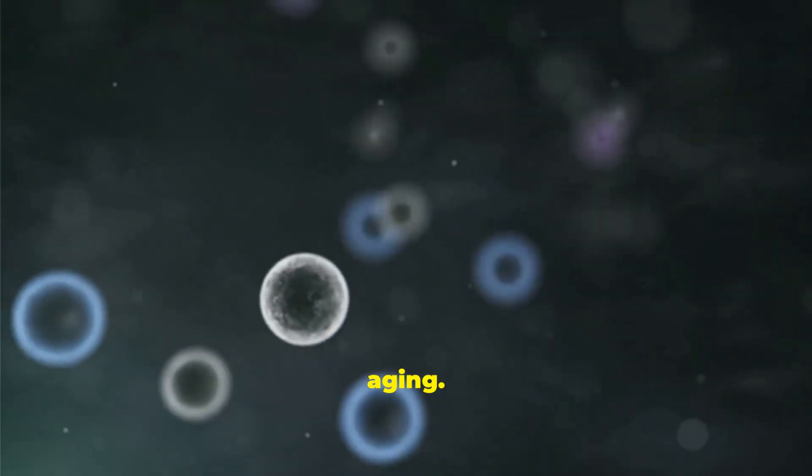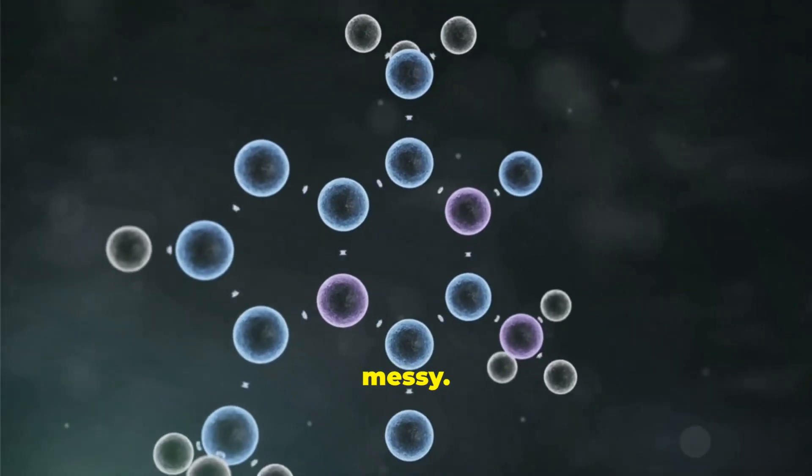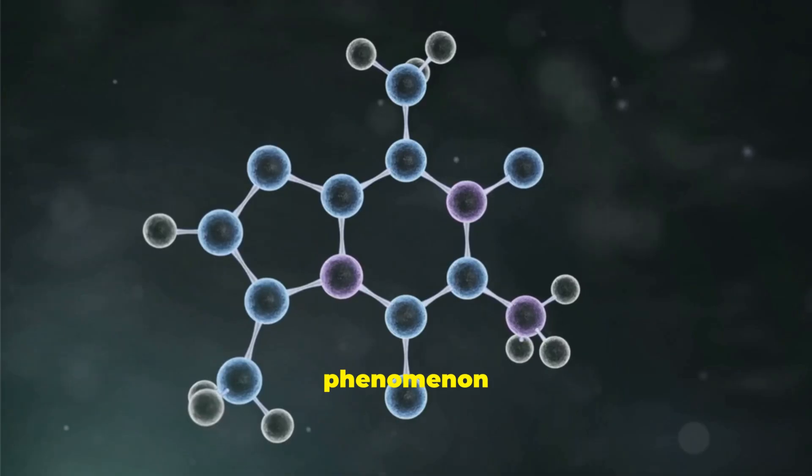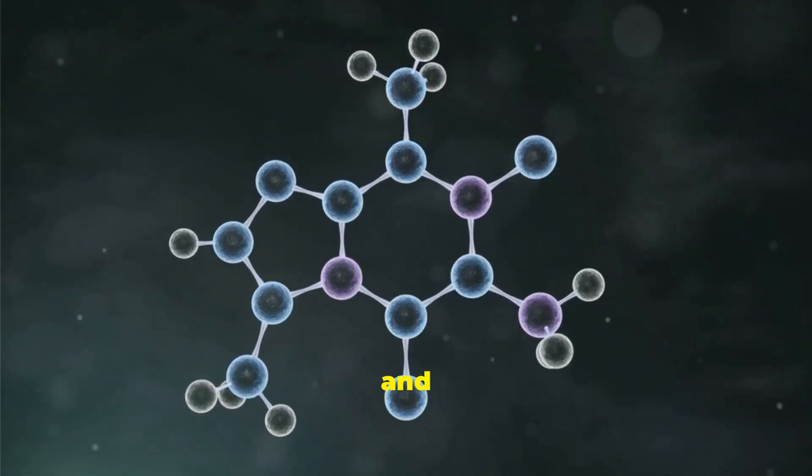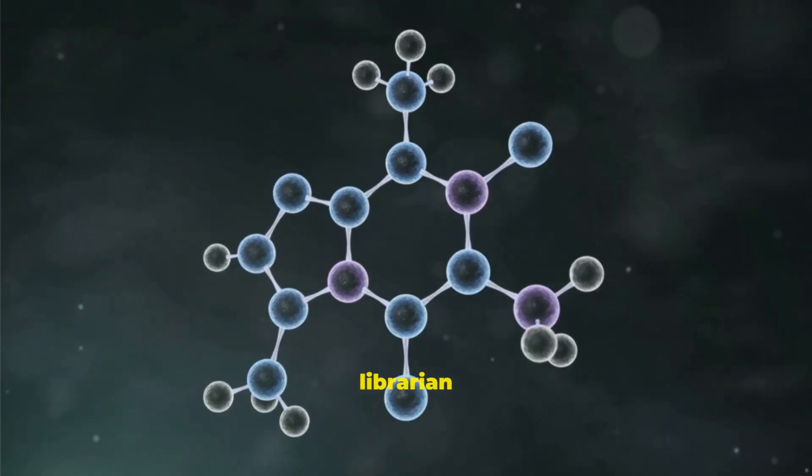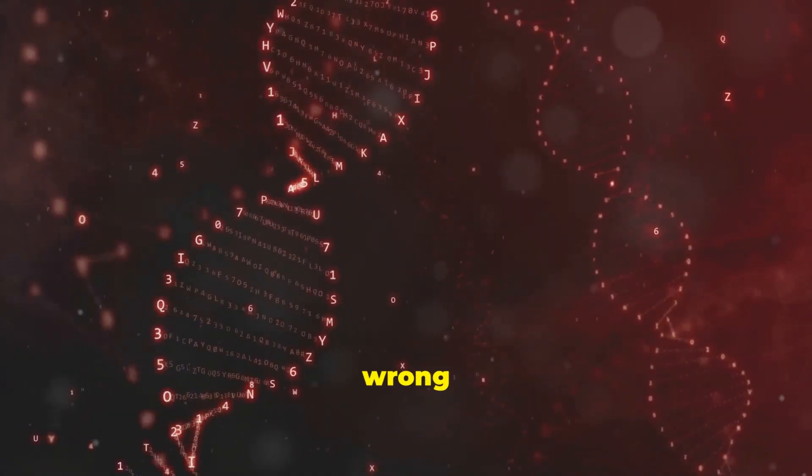Now, here's the crucial link to ageing. As we get older, this finely tuned system starts to get messy. The instructions become garbled. This phenomenon is called epigenetic drift. Genes that should be silent get turned on, and genes that should be active get silenced. It's like the librarian gets confused and starts putting the wrong sticky notes on the wrong recipes.